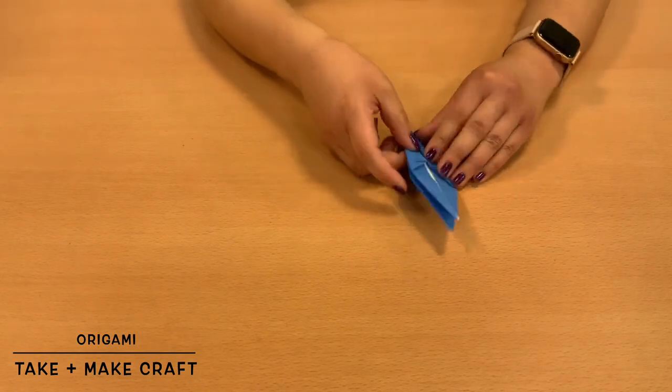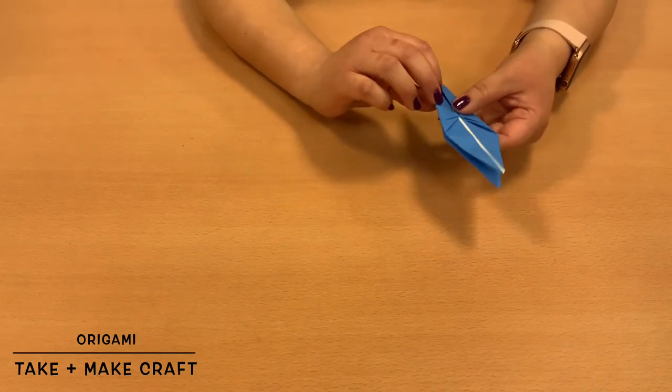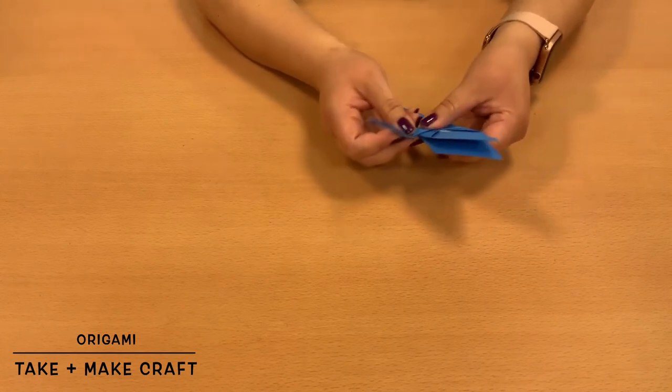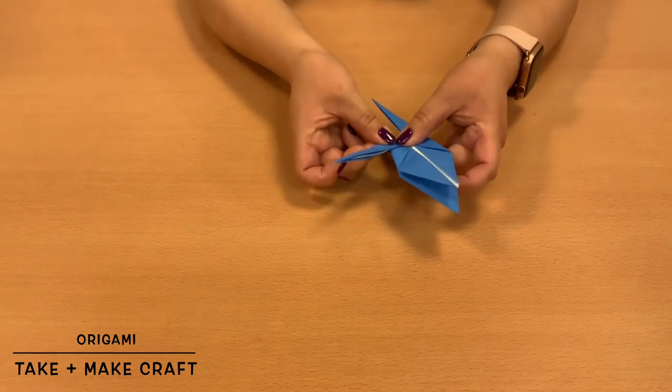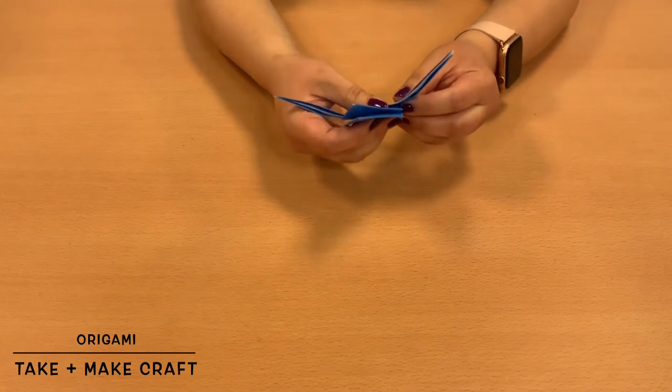Then, what you're going to do with the two legs, you're going to take one side, and you're going to fold it upwards, like so, to the side. Just a little off angle, and then you'll do the same with the other side.